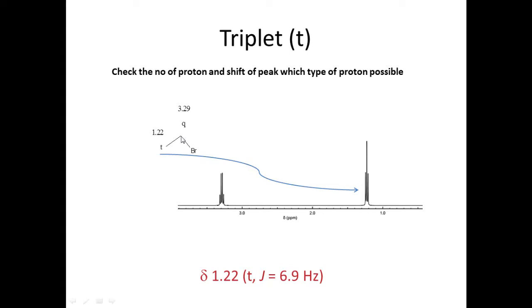3 plus 1 is equal to 4. So here is 3.29 is quartet. So we report like 1.22 triplet J is equal to 6.9. I will show you how it comes 1.22 and J is 6.9 in next slides.